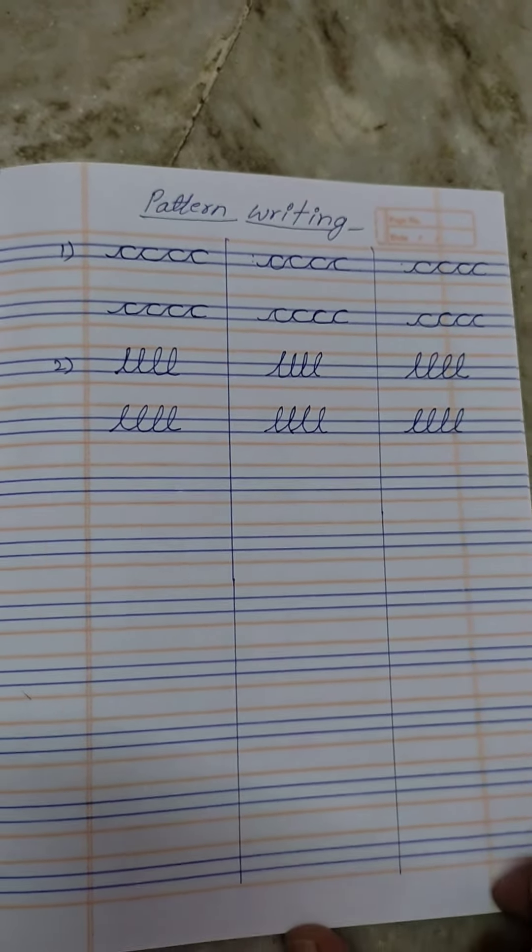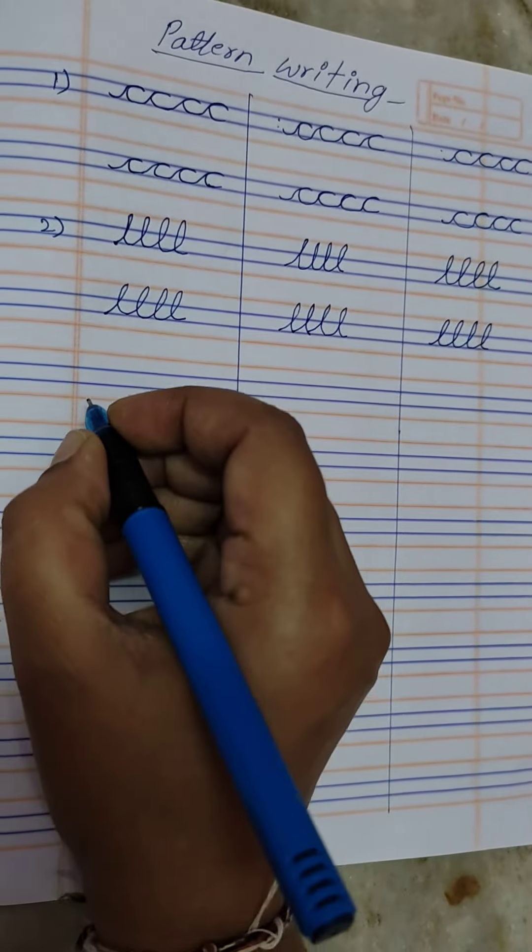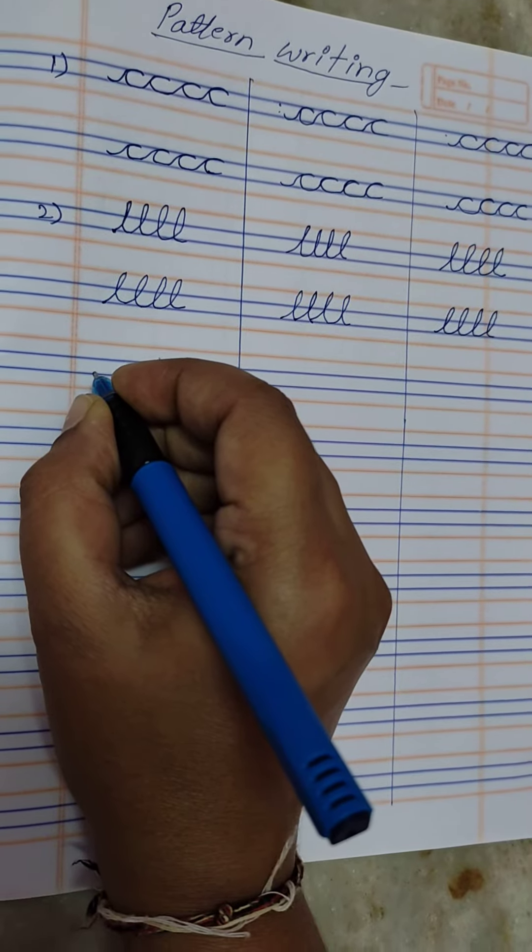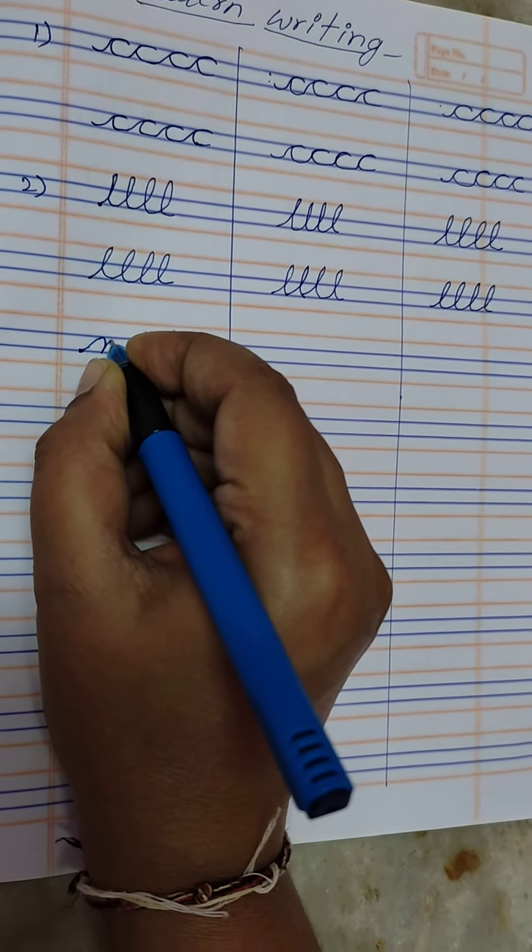Now I am going to demonstrate the pattern writing. Ok, this one is the M pattern. So write one sliding line like this and write M.